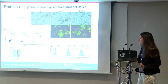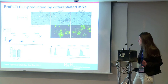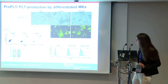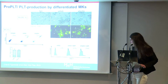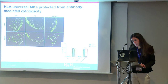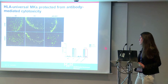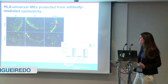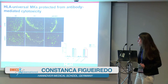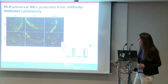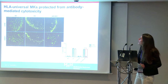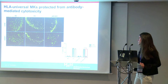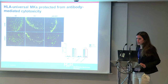We harvested platelets from the cell culture supernatant and stimulated them with platelet agonists such as ADP, demonstrating they were able to upregulate activation markers. To confirm immune evasion, we performed complement-dependent cytotoxicity assays, incubating megakaryocytes and platelets with antibodies specific for the HLA alleles expressed by the progenitor cells. Non-silenced cells showed very high lysis rates, while HLA-silenced megakaryocytes and platelets were able to escape complement-mediated cytotoxicity with significantly lower lysis scores.